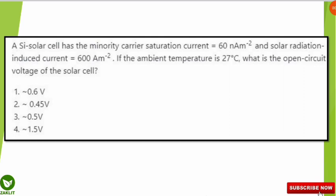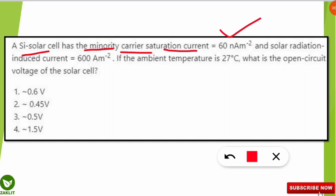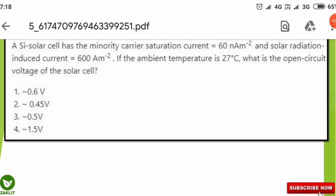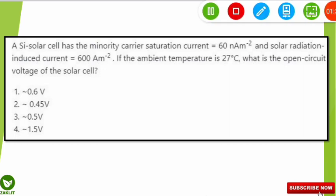The question: a silicon solar cell has the minority carrier saturation current given as 60 nano ampere per meter square. This question is from photovoltaic cells — solar cells. The next value given is the solar radiation induced current, which is 600 ampere per meter square. Note that one is in ampere per meter square and the other is in nano ampere per meter square, so you must convert nano ampere to ampere by multiplying by 10 to the power minus 9.